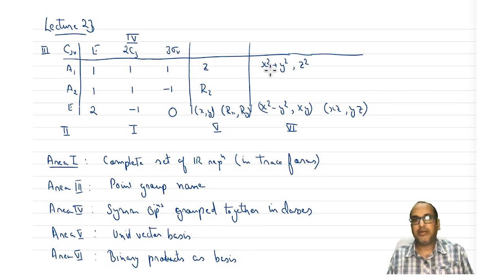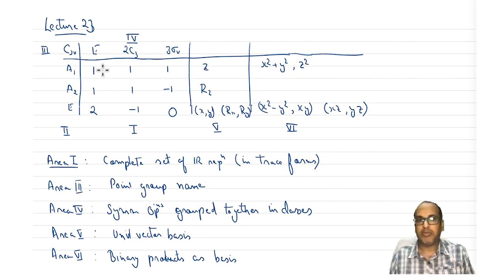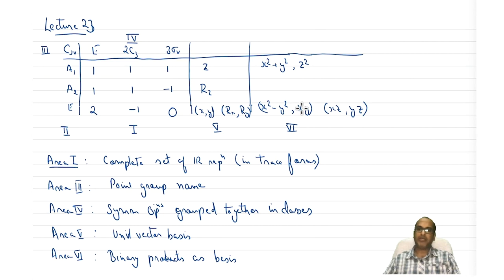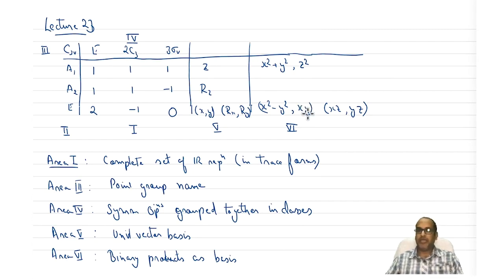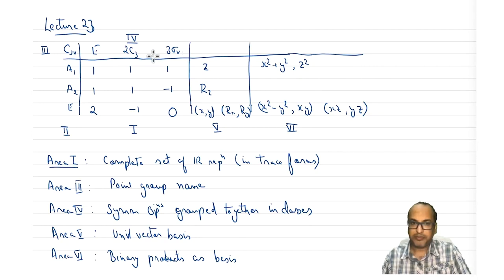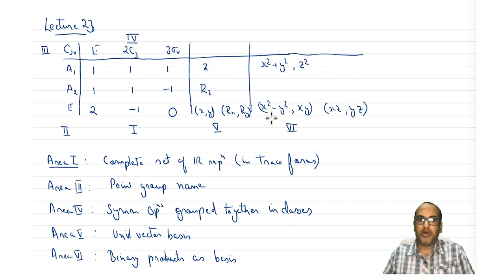For area 6, if you take x squared plus y squared, that will form a basis the same as Z. Similarly, z squared will also form a basis for A1. If you take x squared minus y squared, together with XY — these are inseparable and together form the basis for E. We discuss these binary products because they have properties of d orbitals, and if we want to know d orbital properties, we need to know how these binary products transform under a particular symmetry operation.